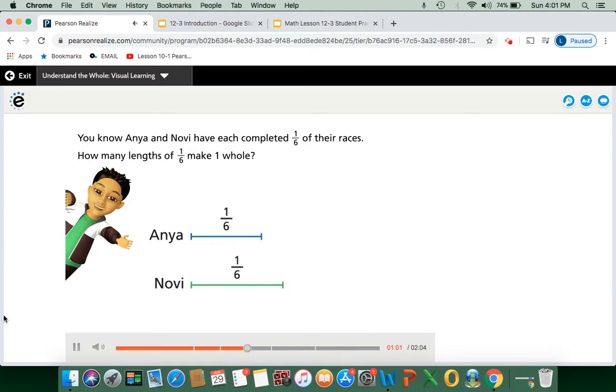The pictures for the tracks will be different because the one-sixth part for each track is different. You can look at the fraction to find how many parts will make up the whole. You know Anya and Novi have each completed one-sixth of their races. How many lengths of one-sixth make one whole? So think about it. Our total or denominator is six. So how many one-sixths would it take to create our whole?